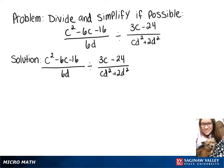We're going to start this division problem by multiplying by the reciprocal. So we'll have c squared minus 6c minus 16 over 6d times cd squared plus 2d squared over 3c minus 24.